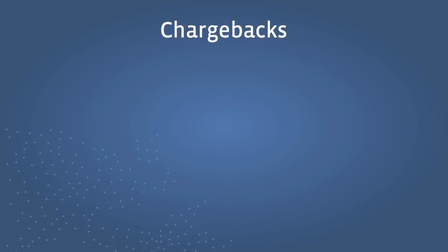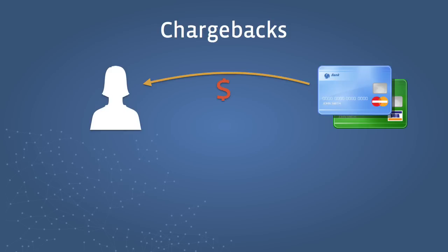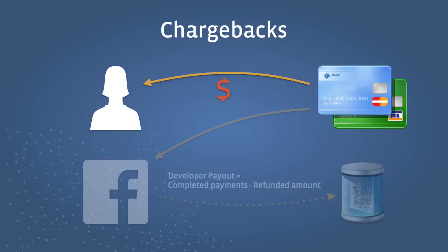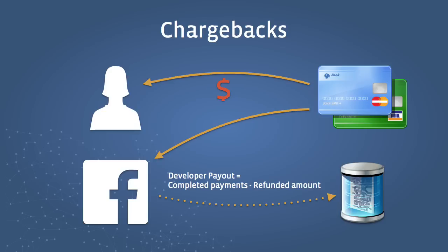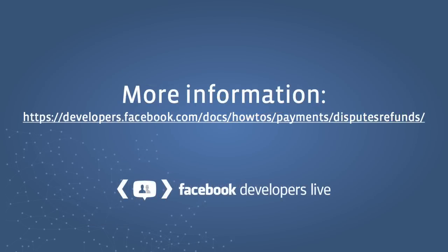A chargeback occurs when a user of your app contacts their payment provider directly — i.e. their credit card company or PayPal — to dispute a transaction. A chargeback can happen for a variety of reasons, including unauthorised use of a financial instrument, double billing, or non-receipt of a virtual good. If the payment provider issues a refund, Facebook will recover the cost of the chargeback from the developer by deducting the charged back amount from the next payout made to the developer at the end of the payout cycle. Facebook will only do this if the chargeback occurs within 90 days of the original transaction. Beyond 90 days, Facebook will be responsible for the cost of the chargeback, apart from in some very infrequent edge cases. These are detailed in the documentation listed here.